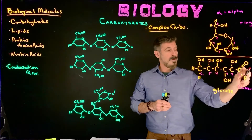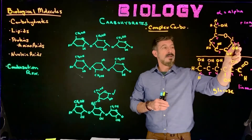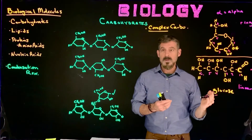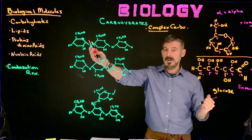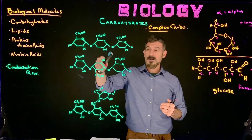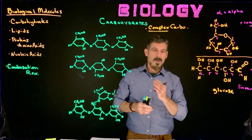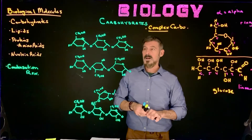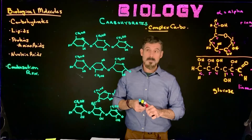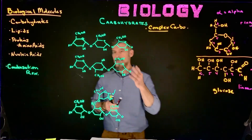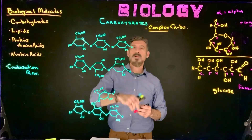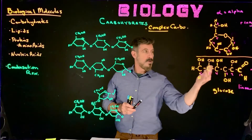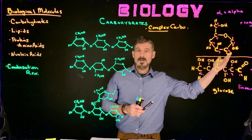You should be able to draw this in my class - the linear form. The ring form I'd like you to be able to recognize, but we're not going to get into drawing all the rings. Same with the structures we're going to get to now - be able to recognize them. These are all going to be glucose molecules that are repeating, joined together: one ring to another ring to another ring.